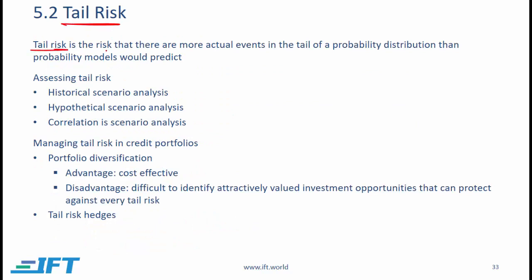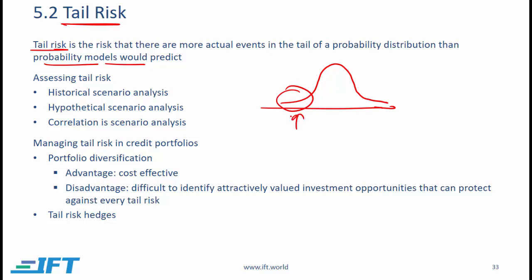Tail risk is the risk that there are more actual events in the tail of a probability distribution than probability models would predict. Most probability models are based on a normal distribution, which suggests a certain percentage of outcomes in the left tail, but in reality we often have many more outcomes there and the severity can be much worse than a normal distribution predicts. For this reason, tail risk events are difficult to model and almost impossible to predict in advance.